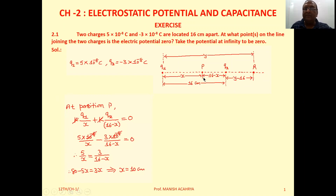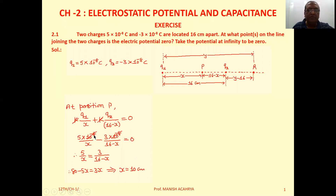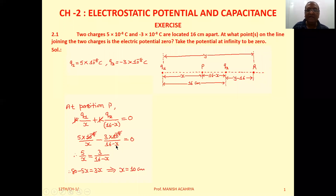At position P we can write the equation for the resultant potential: KQ1/x + KQ2/(16 - x) = 0. Substituting the values of Q1 and Q2, and taking K common — it cancels on the right-hand side. So we get: 5×10⁻⁸/x minus 3×10⁻⁸/(16 - x).